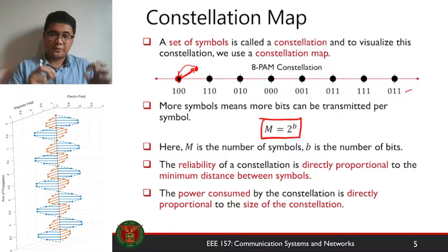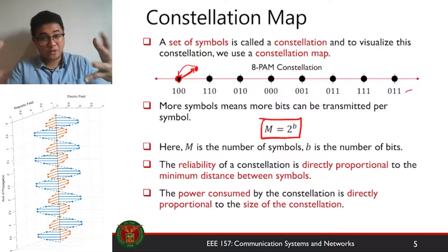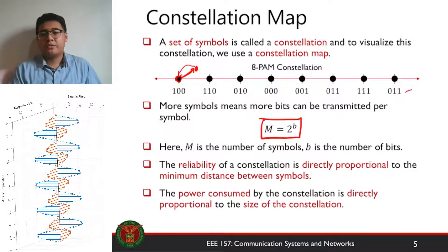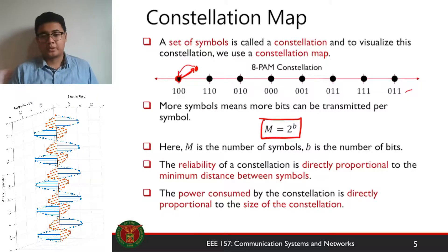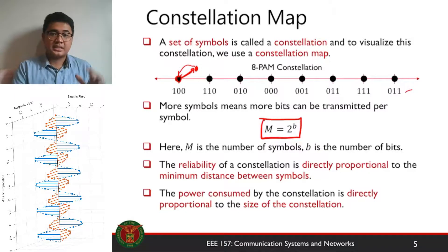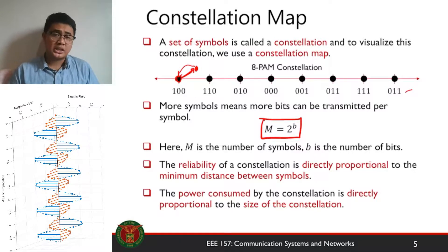However, the trade-off is that if you space symbols far enough, the power consumed is greater. For example, with high and low voltage, more spacing requires a higher voltage, which means higher power. This is true for any digital modulation technique — whether using light pulses or electromagnetic waves, more spacing between symbols means more power. Using a constellation map, we abstract the hardware type used. The reliability is directly proportional to symbol spacing, and a larger constellation with greater spacing consumes more power.